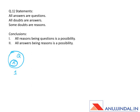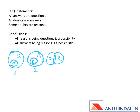Let's mark it number one. Now the third statement is: some doubts are reasons. One possible Venn diagram for this statement is — if these are doubts and these are reasons, you can see the overlapping part represents 'some doubts are reasons.' Let's mark it number three.